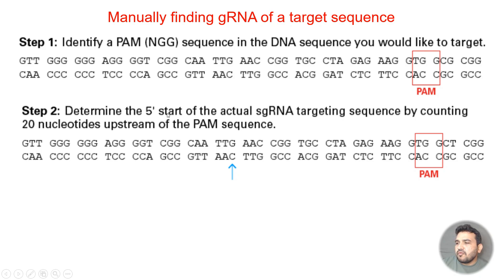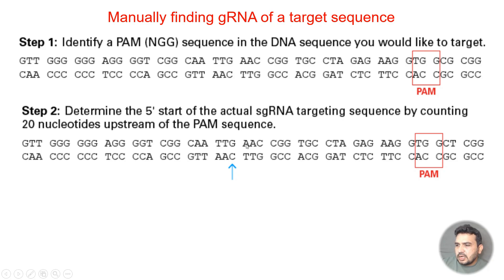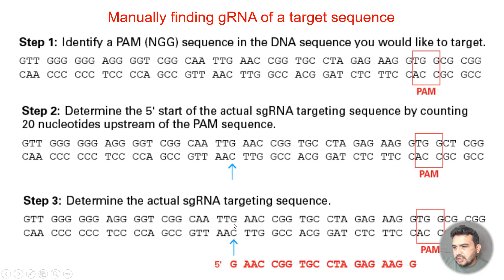In step two, we determine the 5-prime start of the single guide RNA by counting 20 nucleotides upstream of the PAM sequence. Here was the GG PAM sequence, and we count: 1, 2, 3, 4, 5, 6, 7, 8, 9, 10, 11, 12, 13, 14, 15, 16, 17, 18, 19, and 20 nucleotides upstream. From this point to this point would be our guide RNA sequence — G, then AACGGTGCCTA, GAGAAG.